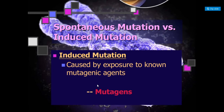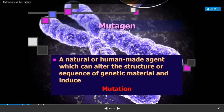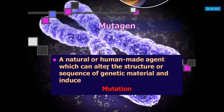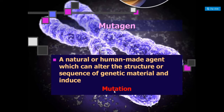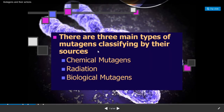Induced mutations are caused by exposure to known mutagenic agents, simply called mutagens. A mutagen or mutagenic agent is a natural or human-made agent which can alter the structure or sequence of genetic material and induces mutation. There are three types of mutagenic agents classified according to their sources: chemical mutagens, radiations, and biological mutagenic agents.